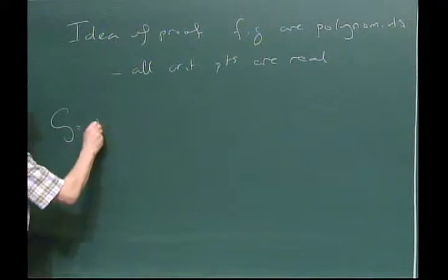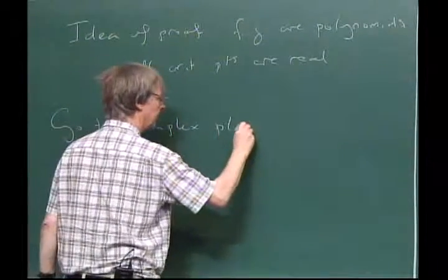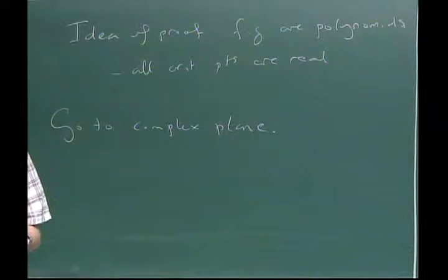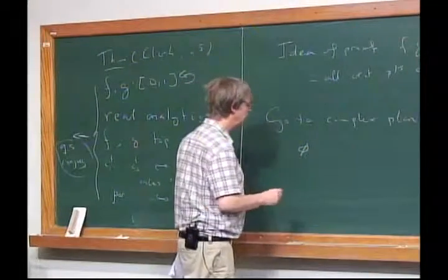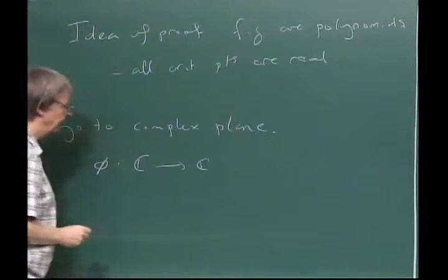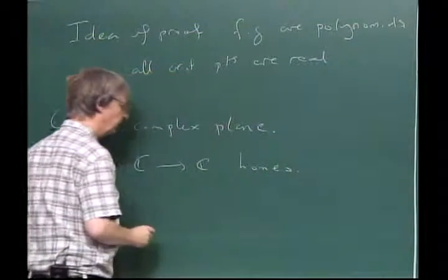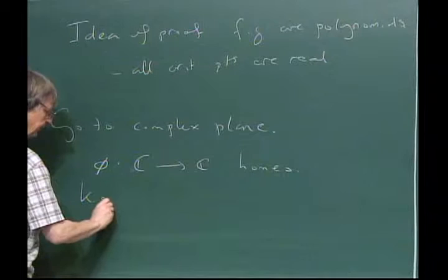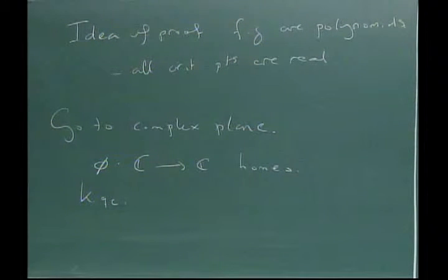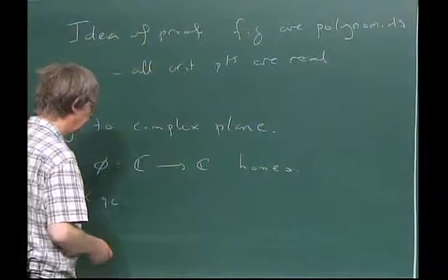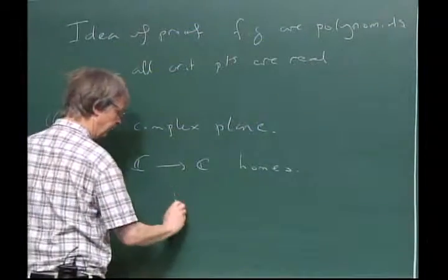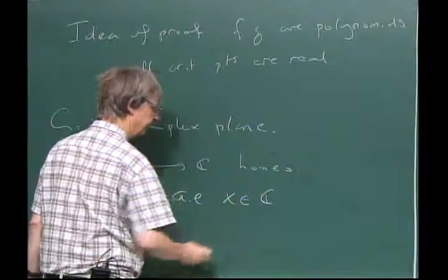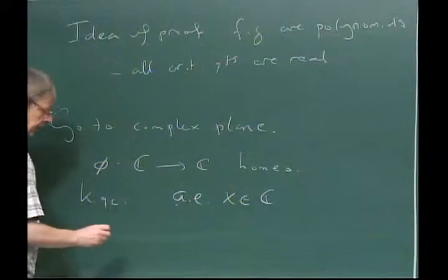Instead of looking at the real line you go to the complex plane, and instead of trying to prove that something is quasi-symmetric you try to prove something is quasi-conformal. A homeomorphism of the complex plane is called K quasi-conformal. There are three or four equivalent definitions; I'm going to give one of them which is closest to what I will actually be using here, and also easy to state.